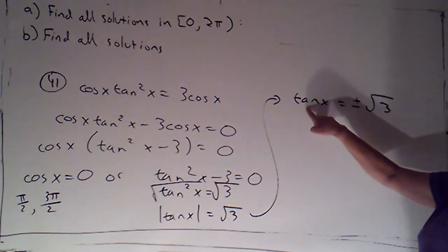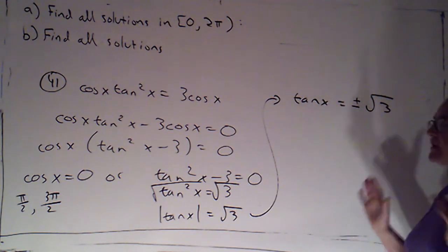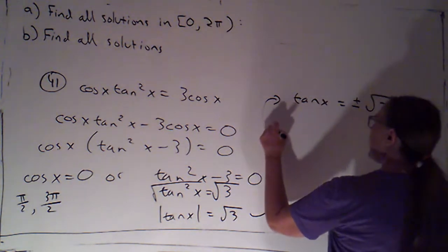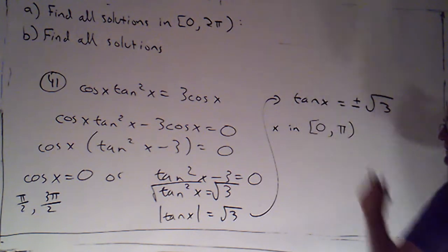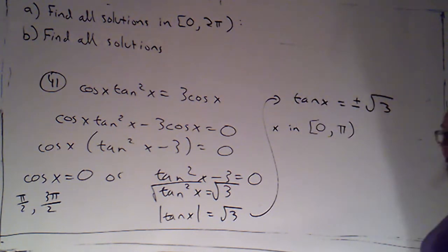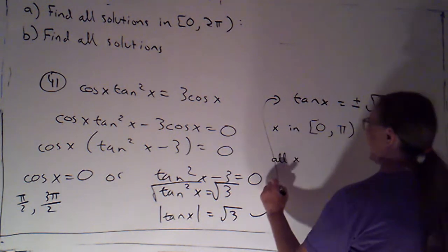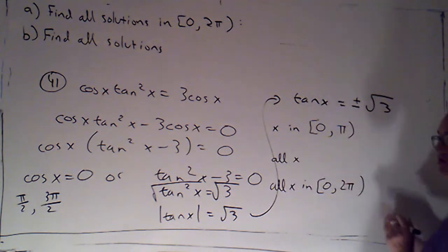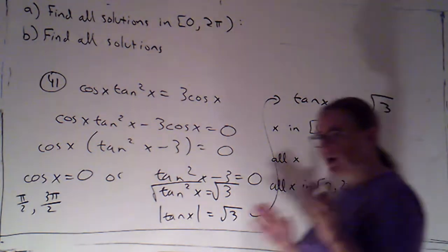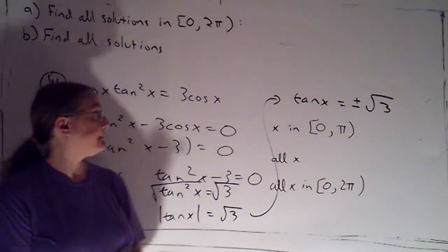Now, because I'm working with tangent, I'm going to work in just one period. So I'm going to look for x values in the interval from zero to pi. That would be one period that I would have. And then I'll get all x, and then I'll get all x in the interval from zero to two pi. Remember, tangent and cotangent are a little bit different just because their period is pi rather than two pi.